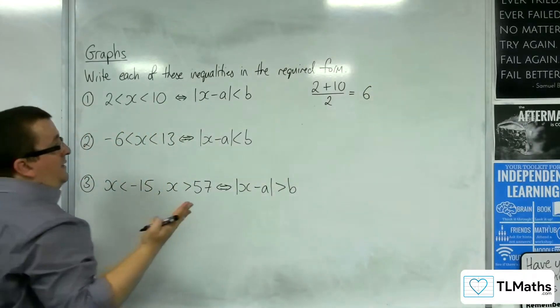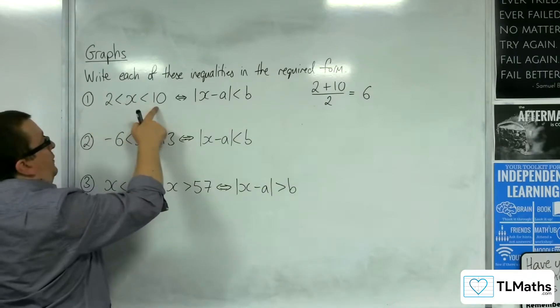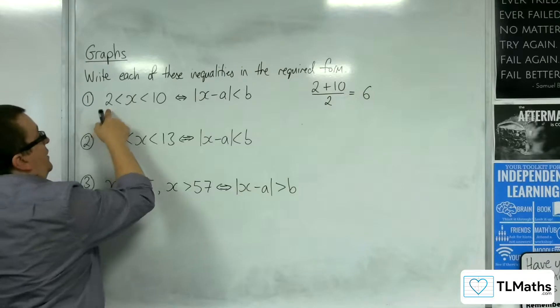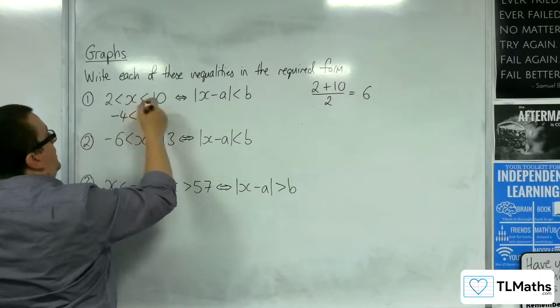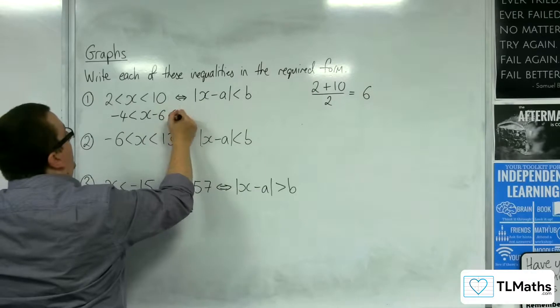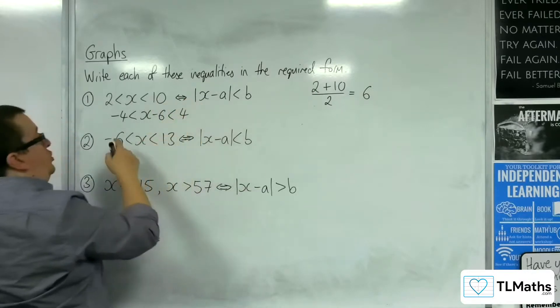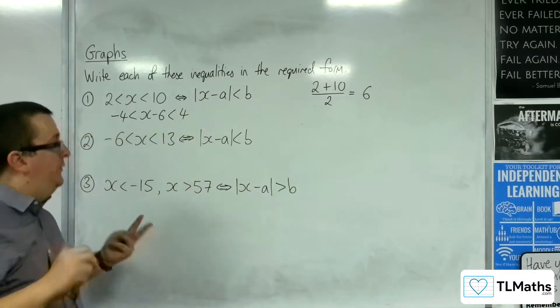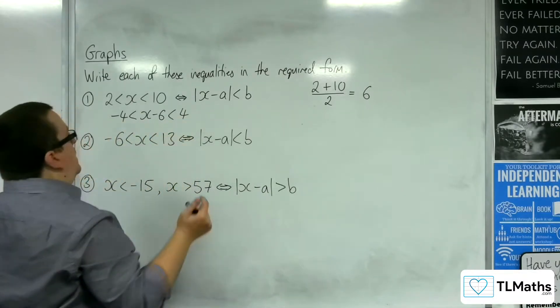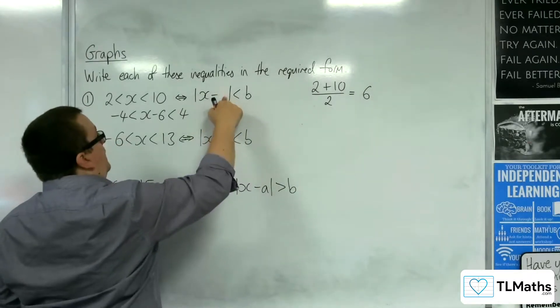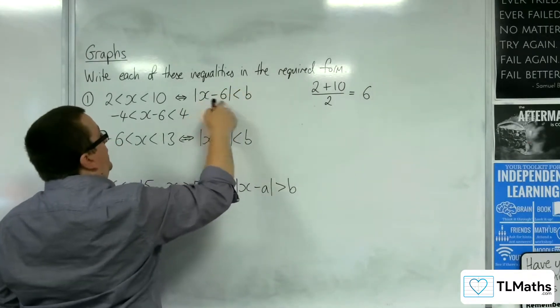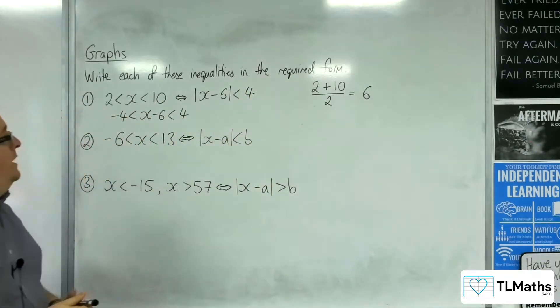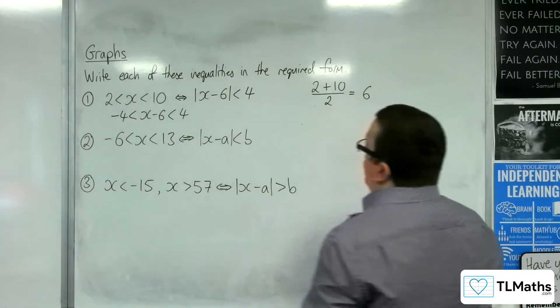Then, we subtract that value from each of the elements. So, 2 take away 6 is going to be minus 4, x take away 6, and 10 take away 6. What you should end up with is numbers either side of the inequality that have the same size. So, you've got minus 4 and 4 here. This can be written in the format of x take away 6 modded is less than 4. That's how we can solve question number 1.